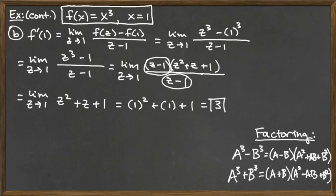1 squared is 1, plus 1, plus 1 — that's a total of 3. And that is what we got when we took this derivative using the h approaching 0 limit as well. Certainly if we're calculating the same thing using two different methods, we should be getting the same answer, and here we do in fact get the same answer.